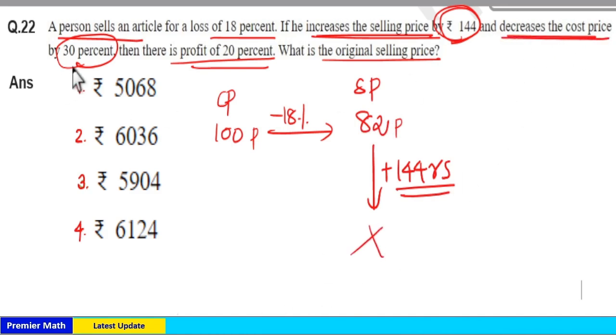So, you can take the decrement of 30% from this 100 part. Because this is percentage. This is percentage of cost price. So, 30% of 100 is equal to 30. So, 100 minus 30 is 70 part is the current cost price.